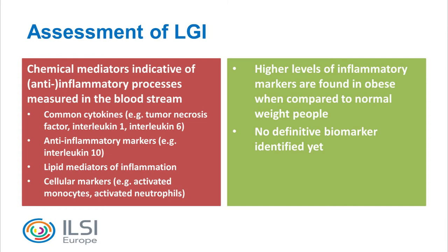It's possible to measure a whole range of these inflammatory markers in the bloodstream as an indicator of ongoing inflammatory processes. In the blood of people with obesity, you find higher levels of these markers than in normal-weight people, and these markers are reduced by interventions that cause weight loss — either lifestyle interventions or surgery. There is a panel of markers indicative of the inflammatory process, but it's not yet clear which is the key one, so at the moment we can assess and monitor changes in low-grade inflammation without having a definitive biomarker.